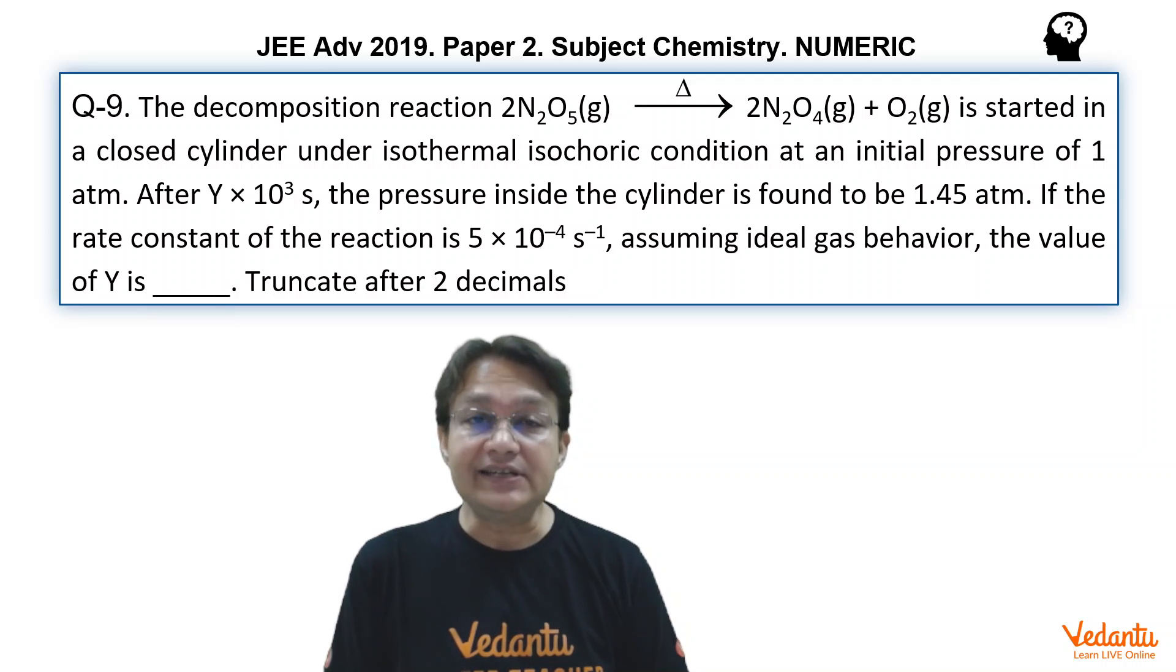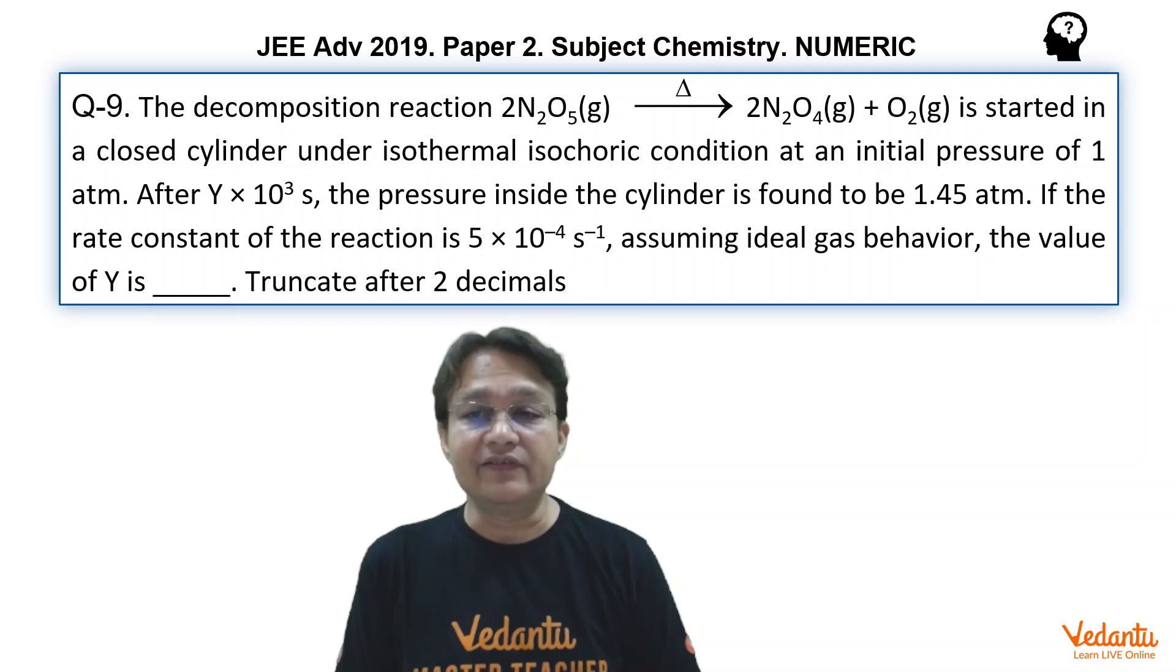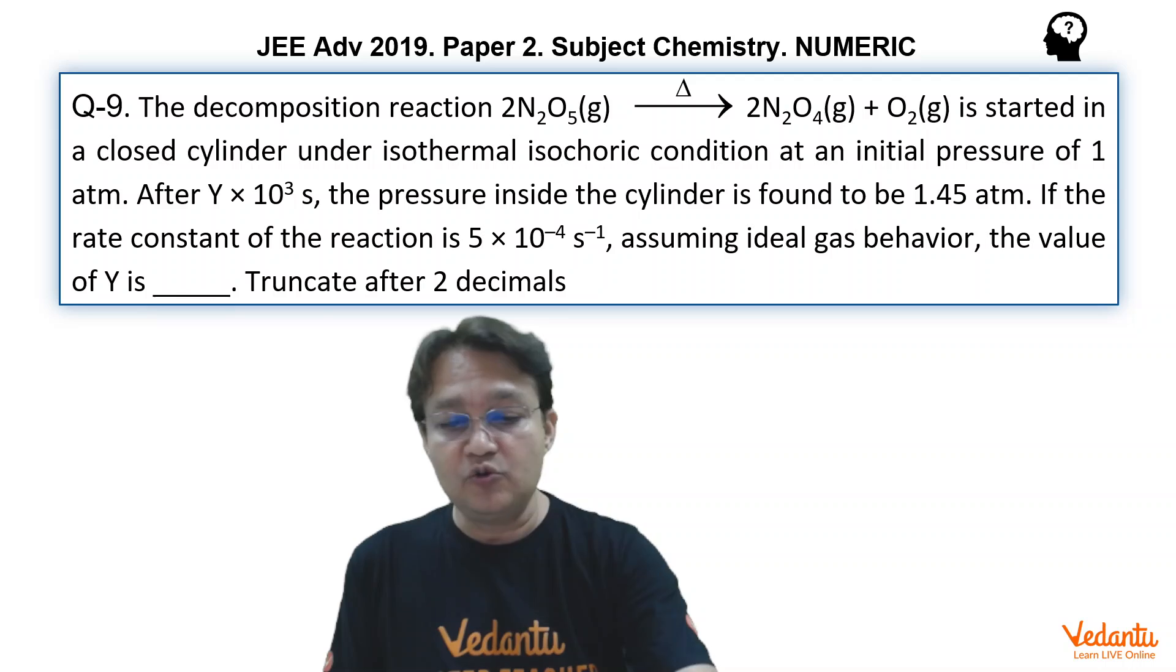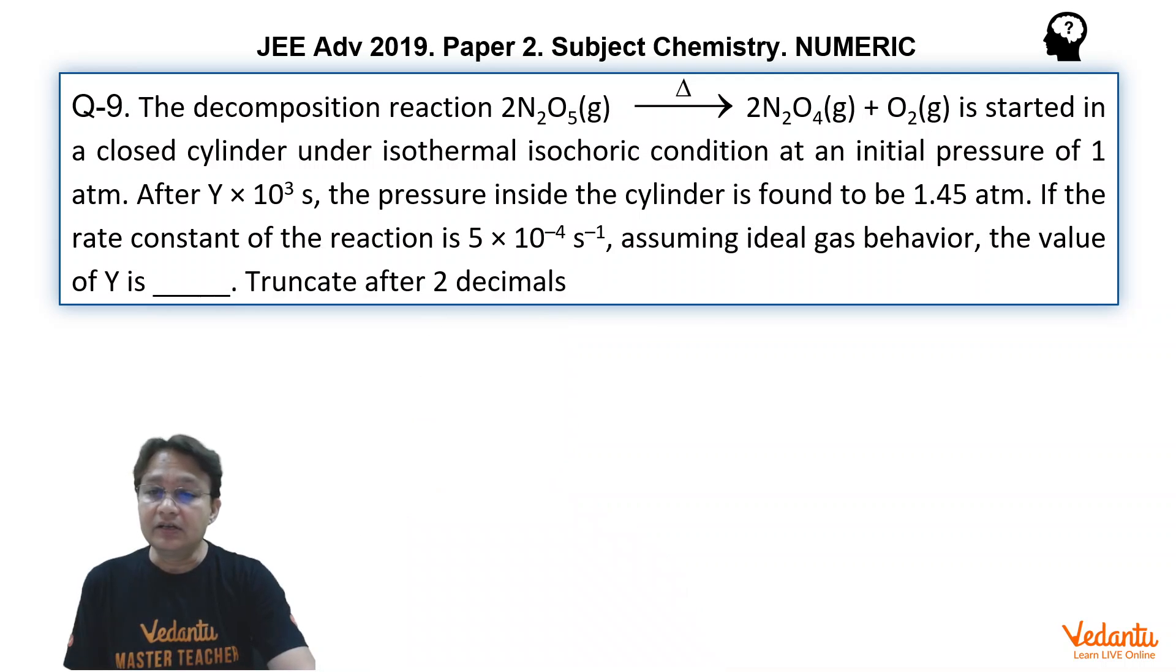After Y × 10³ seconds, the pressure inside the cylinder is found to be 1.45 atm, and if the rate constant of the reaction is 5 × 10⁻⁴, assuming ideal gas behavior, the value of Y is to be calculated. We have to truncate after 2 decimals.